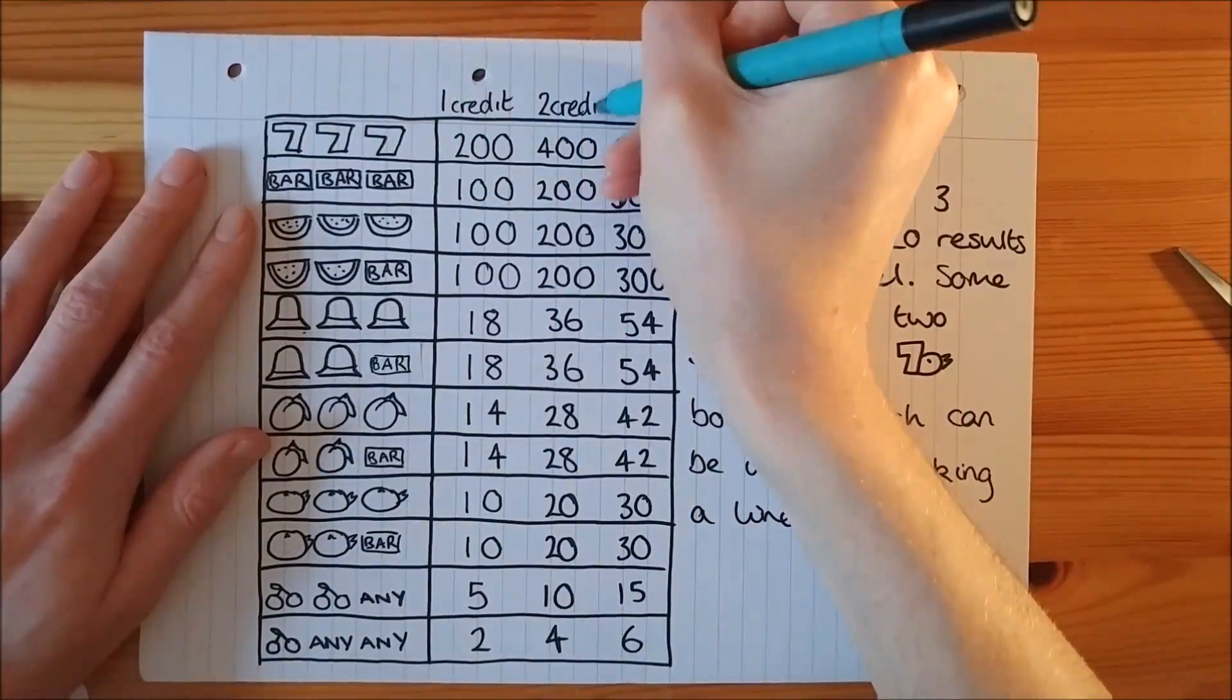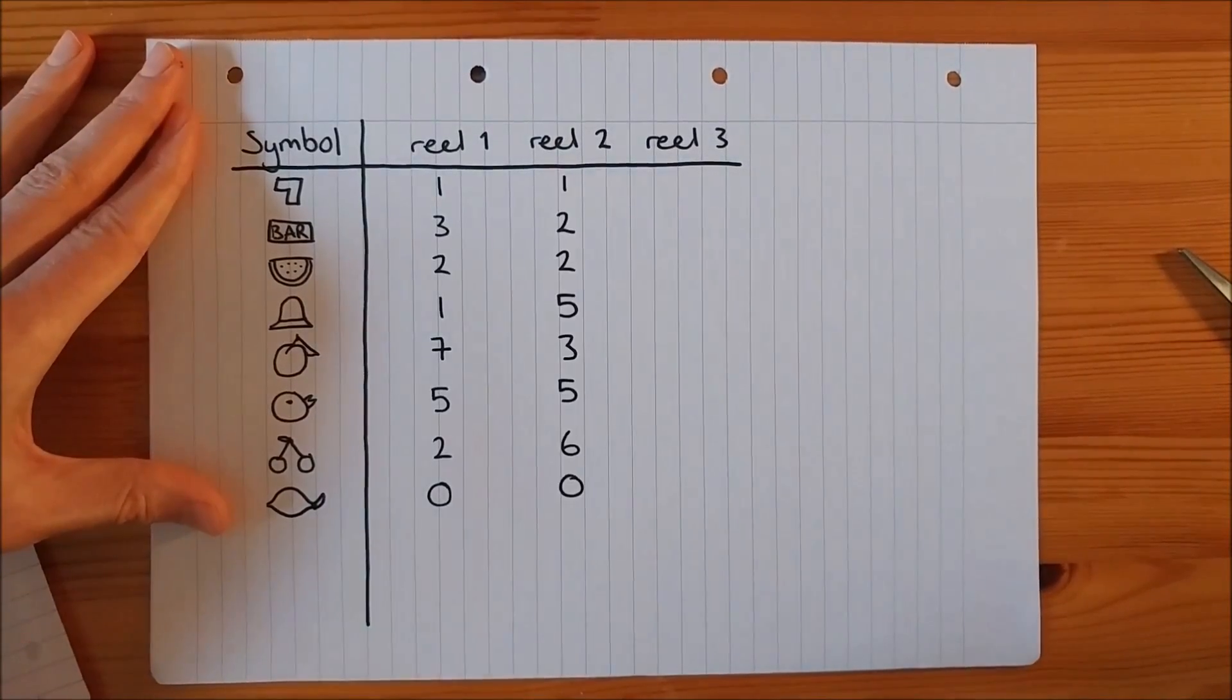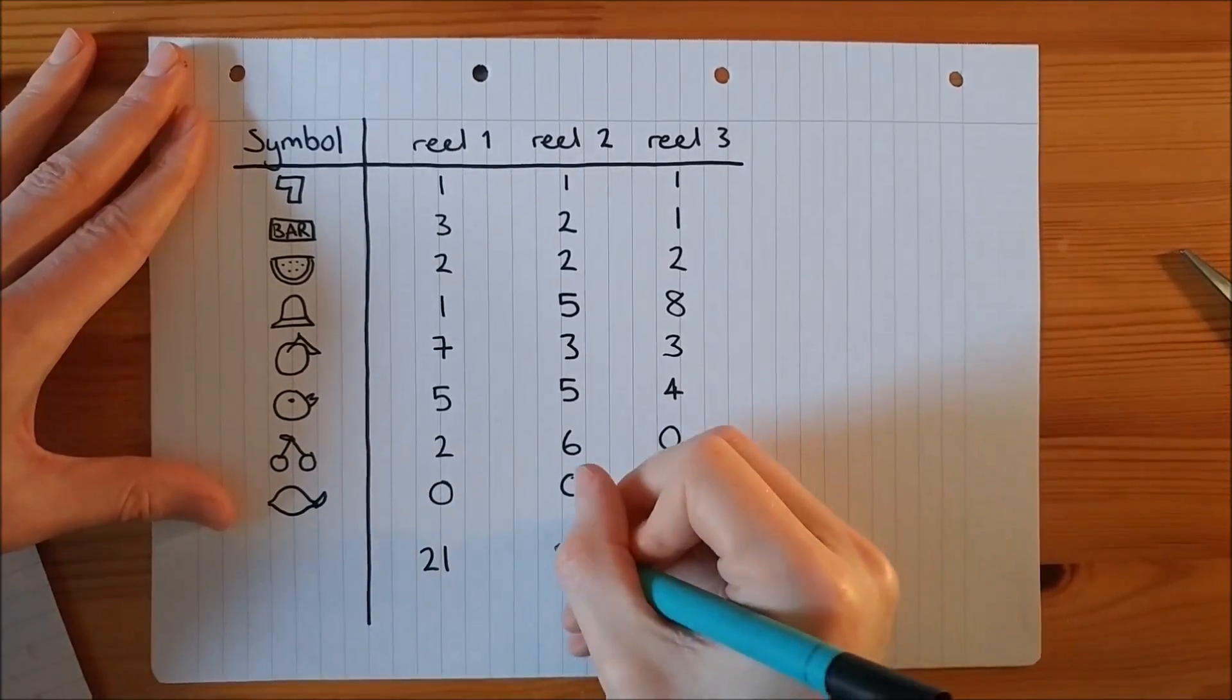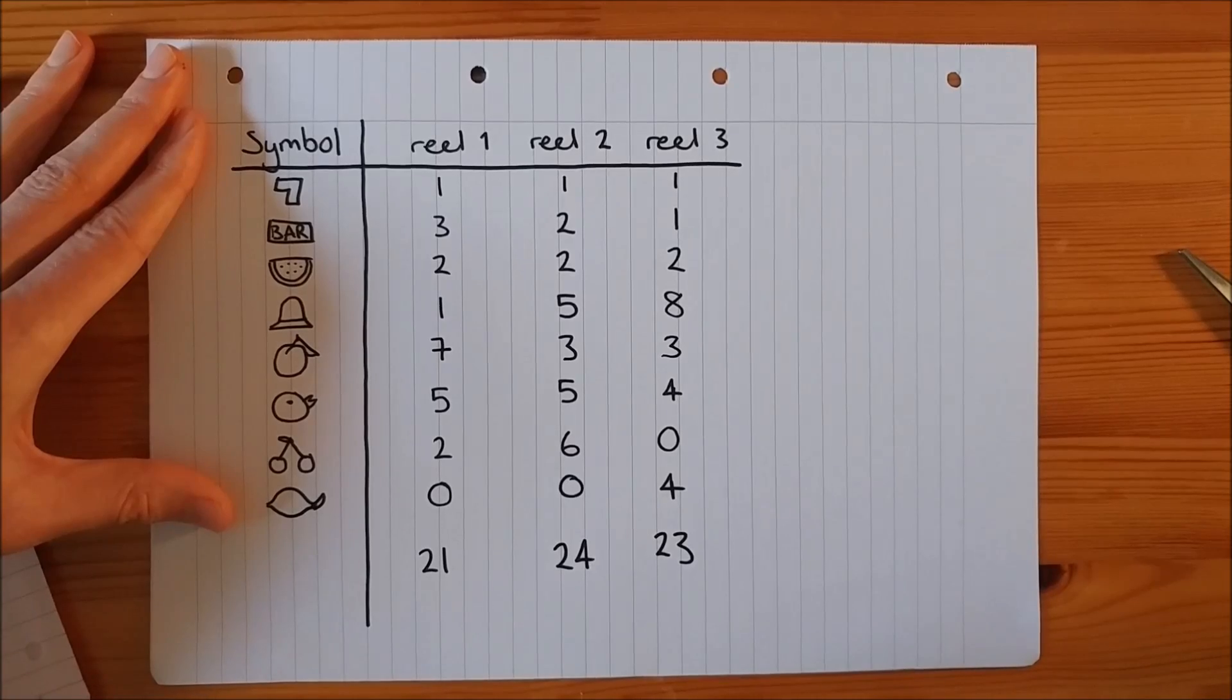The prize money increases linearly with the amount of credits played. We have the following frequency table for each symbol, meaning that reel 1 has 21 different symbols, reel 2 has 24, and reel 3 has 23.